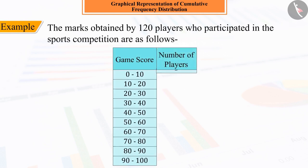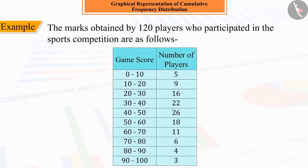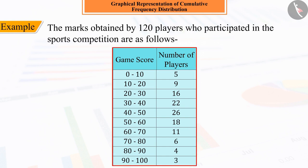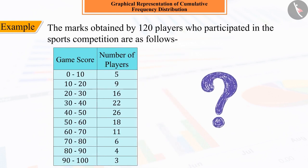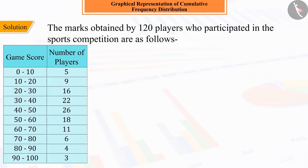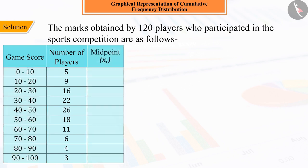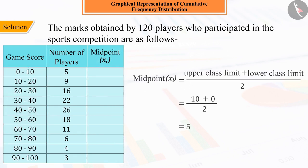On the basis of grouped data, we can see that the marks obtained by the 120 players who participated in the sports competition is represented as follows. For graphical representation, we need to find the midpoint of the given class intervals, which is shown in the frequency table as follows.